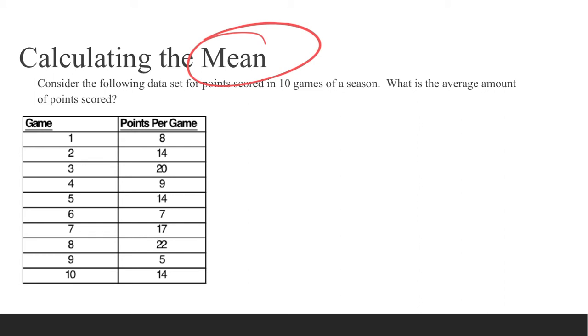If we want to say how many points does this player average in a game, our mean is expressed by x-bar equals the sum of all the x values divided by the total number of games.